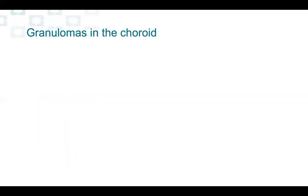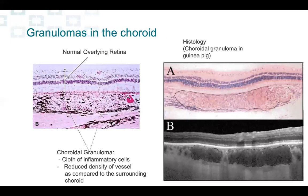What is the granuloma in the choroid? The granuloma is a cluster of inflammatory cells surrounding the bacteria. As such, it is a mass in the choroid occupying space. When it's occupying space, it's also compressing the vessels of the choriocapillaris and of the choroid. So our question was: can we use OCTA in this patient to detect those granulomas, which are occupying space and blocking the flow?